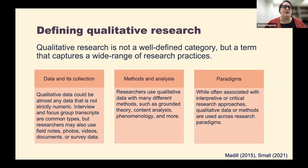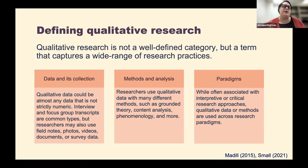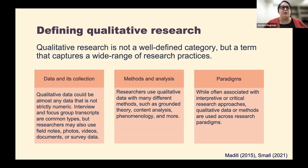The methods could be something like grounded theory, content analysis, phenomenology, and then also paradigms. We often link qualitative research with interpretive work, maybe thematic analysis or grounded theory where it's grounded in the data — not necessarily meant to be an objective representation. Researchers are reflexive and think about their role in doing the data analysis. But you could also use qualitative data in a more positivist paradigm where you're counting things or trying to do consistent, more objective analysis. It's a very wide category.